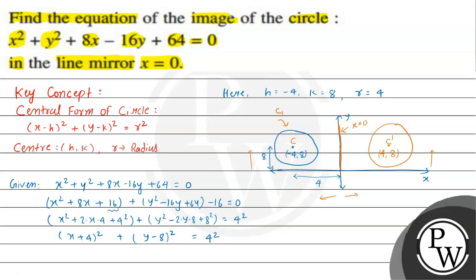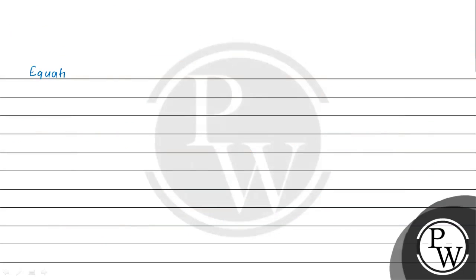So for circle c2, h = 4 and k = 8, with radius r = 4. The equation of circle c2 will be (x - 4)² + (y - 8)² = 4².